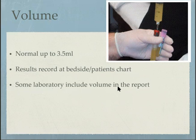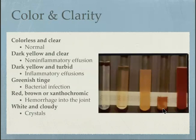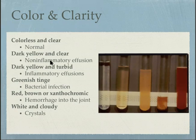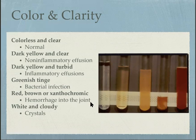For color and clarity, common descriptions include colorless and clear, or dark yellow and clear. A greenish tinge may indicate bacterial infection. Red or brown — or xanthochromic, orangey — coloration may indicate hemorrhage into the joint. White, cloudy, or milky fluid is where crystals are often found.